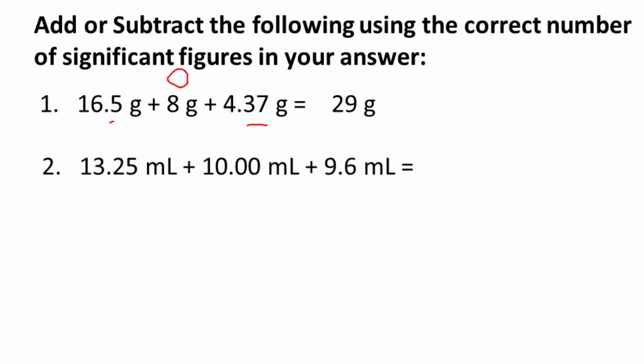Next: 13.25 milliliters plus 10 milliliters plus 9.6 milliliters. These are measurements, so significant figure rules apply even if units aren't always shown. We have 2 places to the right of the decimal, then 0 places, then 1 place. Adding gives 32.85. To match 1 place to the right of the decimal — the least precise — we round to 32.9 milliliters.